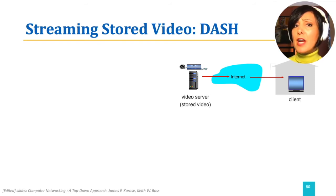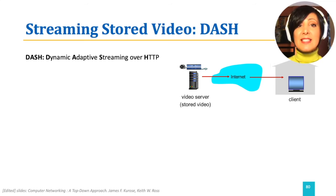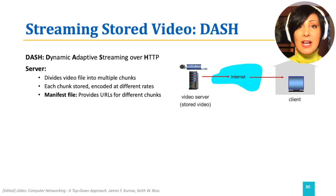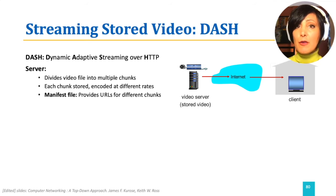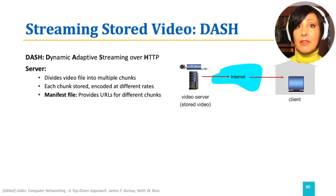However, HTTP itself does not have any offering to adapt the rate or adjust quality of streaming. DASH, which stands for Dynamic Adaptive Streaming over HTTP, is a standard for HTTP-based streaming. In DASH, servers divide video files into multiple chunks. Each chunk, which is a video of a few seconds in length, is encoded at different rates, and each differently encoded chunk is stored in a different file with a different URL. A manifest file that provides the URLs for those different files is also stored at the server along with all of the video files.